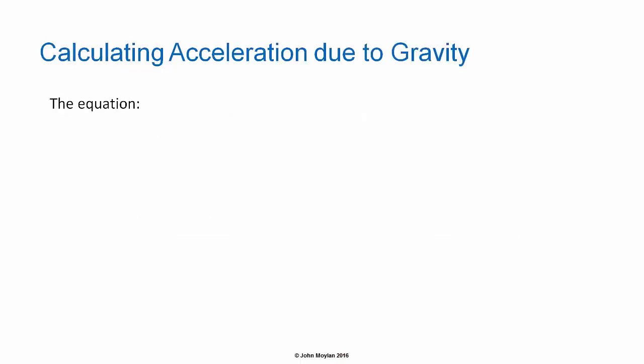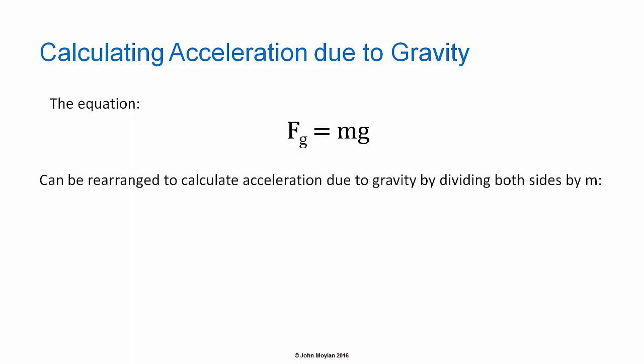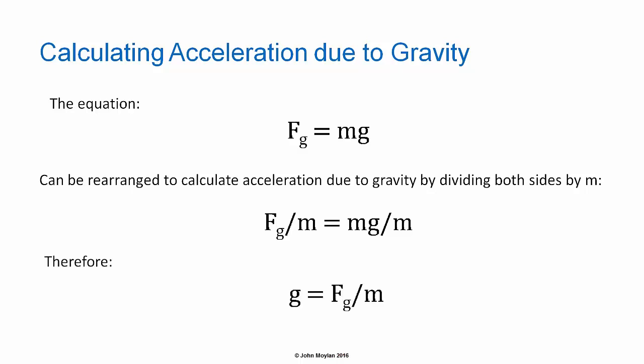We can rearrange the equation F subscript g equals mg to calculate acceleration due to gravity. Dividing both sides by m, the m's on the right-hand side cancel, leaving us with the equation: g equals F subscript g over m — acceleration due to gravity equals force due to gravity divided by the mass of the object.